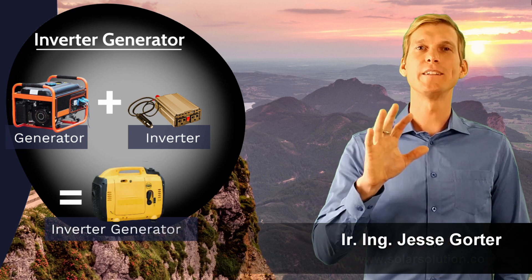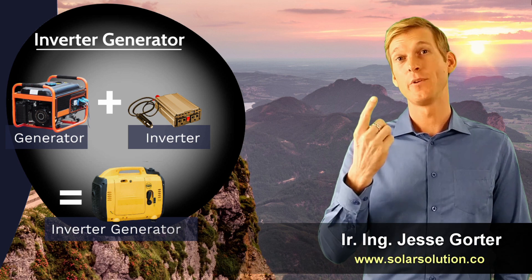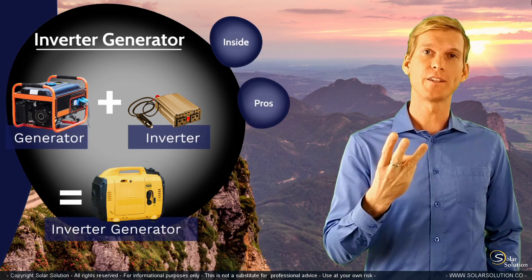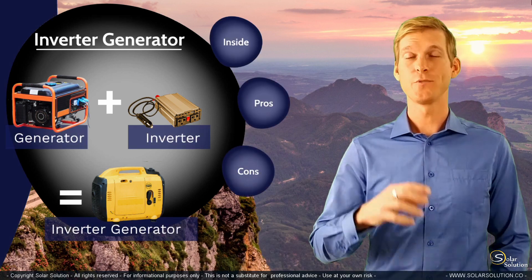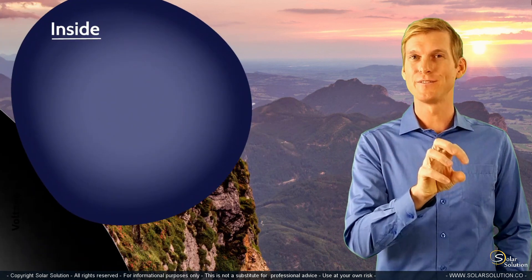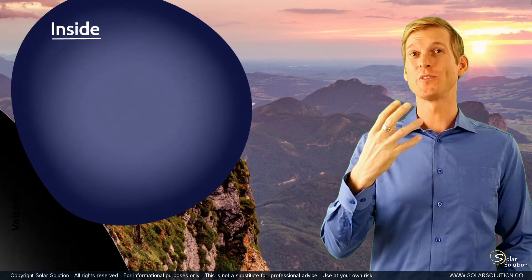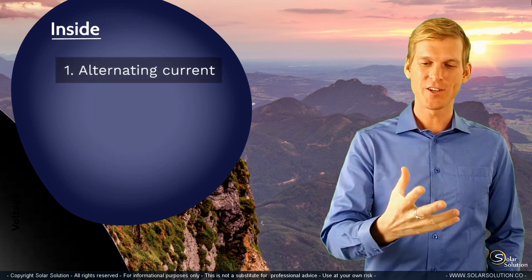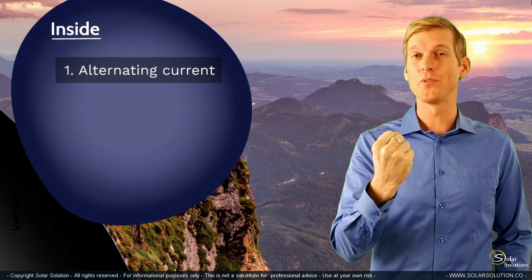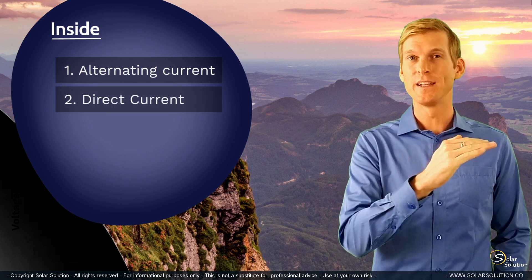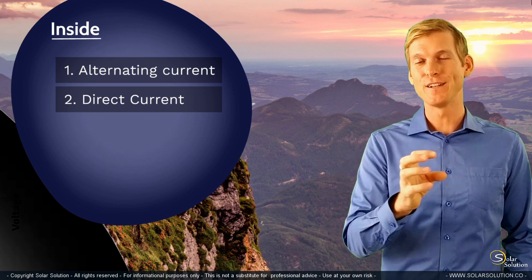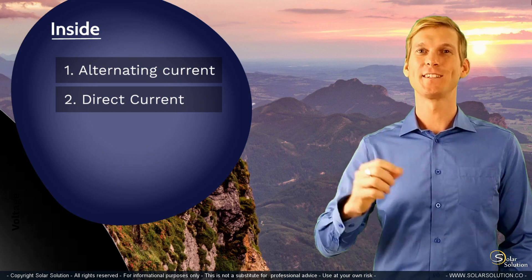We're going to look at this in three sections: what actually happens inside the generator, and the pros and cons of inverter generators. What happens inside is that the electrical generator part produces alternating current. This AC is then converted back into a simple DC power source — direct current. And then that direct current is turned through the inverter back into alternating current again.